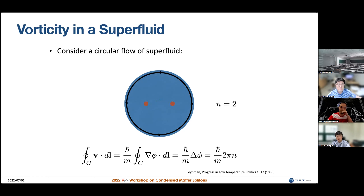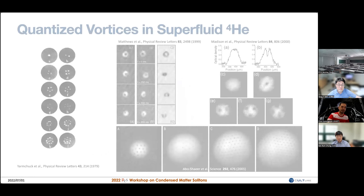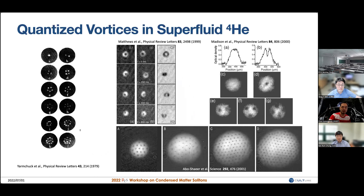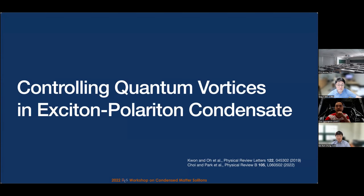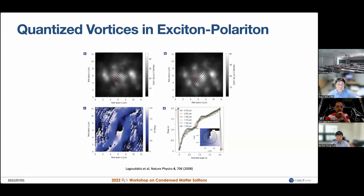Feynman later found it's energetically more favorable to have multiple singly-quantized vortices rather than a single multiply-quantized vortex. This was confirmed experimentally: in superfluid systems you get multiple vortices instead of a single large one. Once the exciton-polariton condensate was discovered in 2006, people tried to look for evidence of this type of superfluid-like behavior.